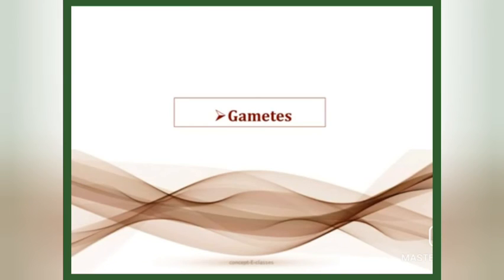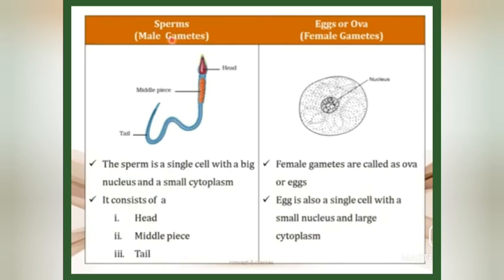The uterus is the part where development of the baby takes place — it is also called the mother's womb. Gametes are an organism's reproductive cells, also called sex cells. Male gametes are called sperms and female gametes are called eggs or ova. The sperm is a single cell with a big nucleus and small cytoplasm, consisting of three parts: a head, a middle piece, and a tail.